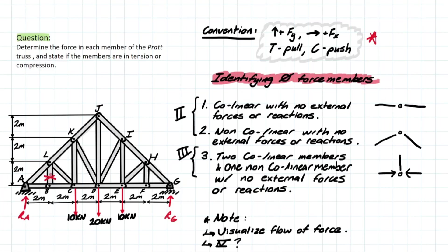When I determine a zero force member, I like to erase it and see how this changes the problem. Removing that member, we're actually creating a new joint with three members connected to it. Looking at this joint, we have a very similar situation as with B — two collinear and one non-collinear with no external force — so we can remove this member as well and identify it as a zero force member. Another great thing is that we have a symmetrical structure, meaning for example member KC is going to have the exact same force as member IE.